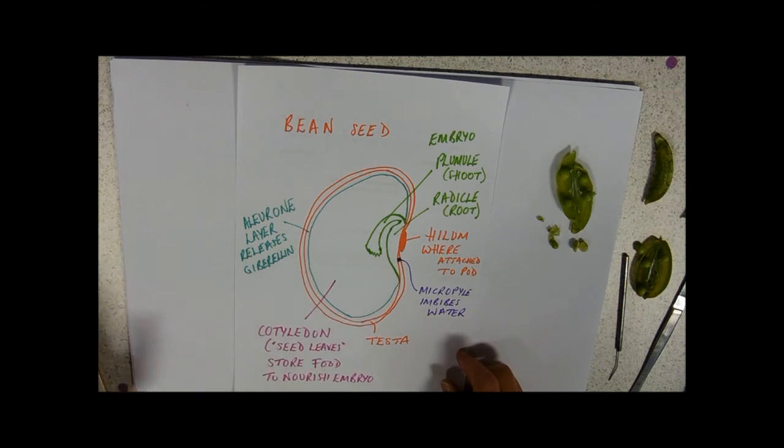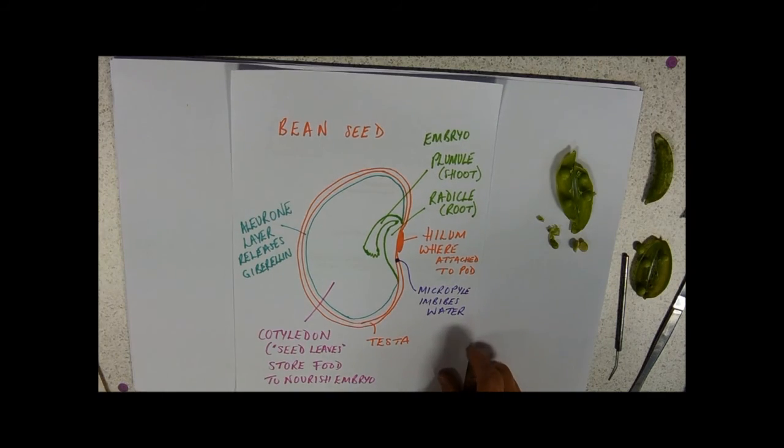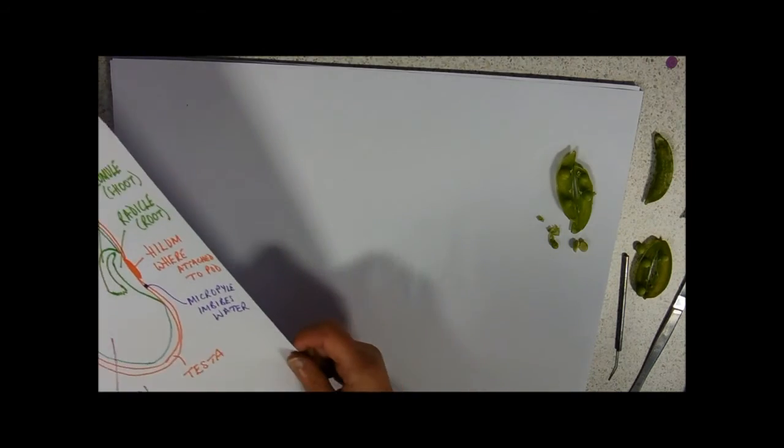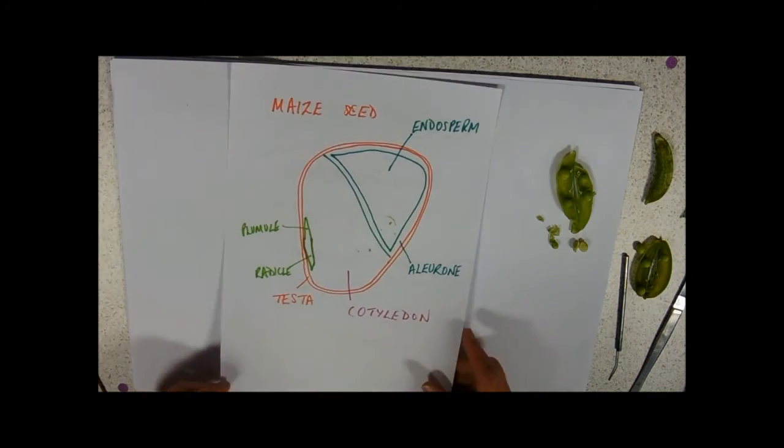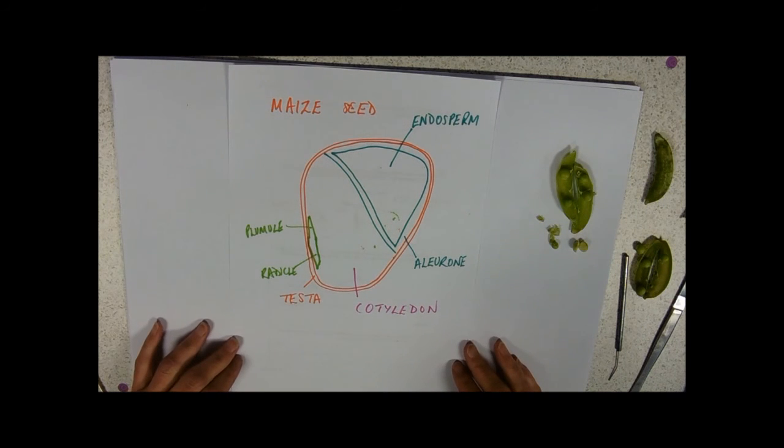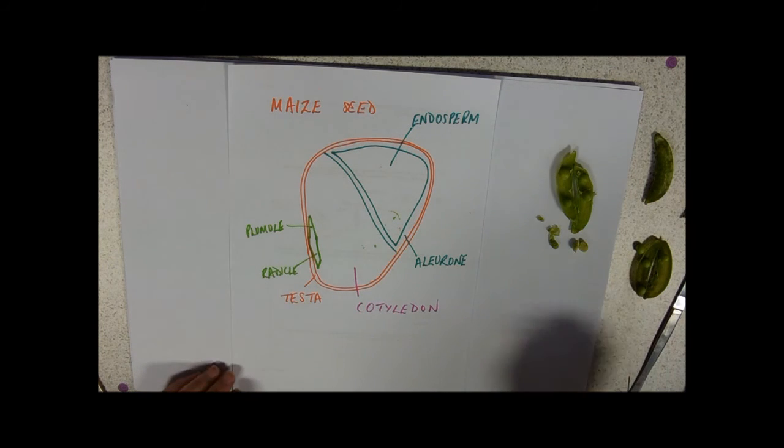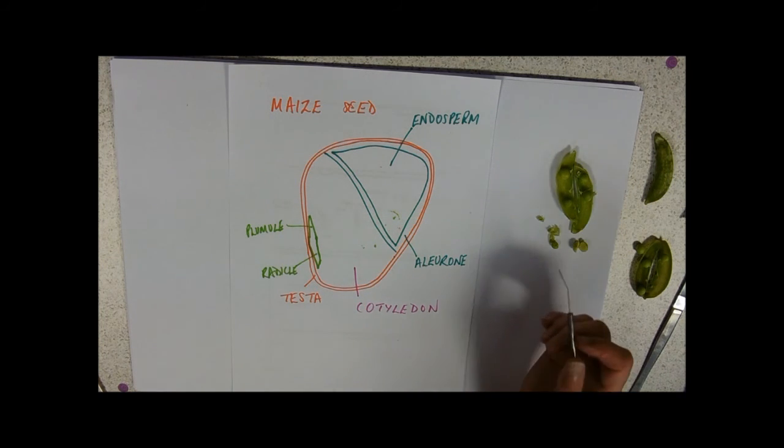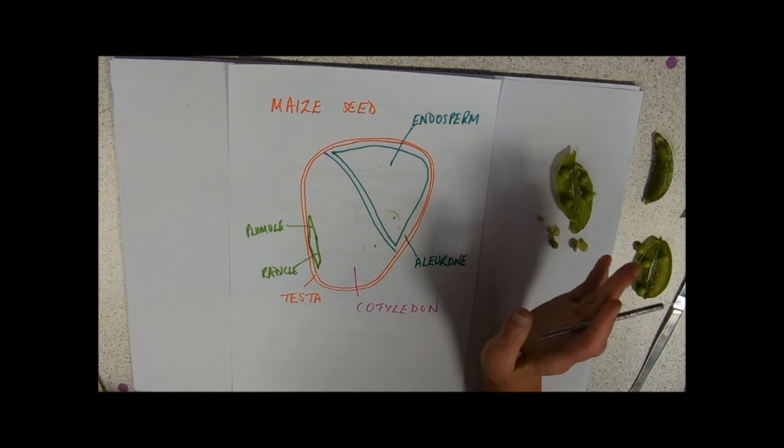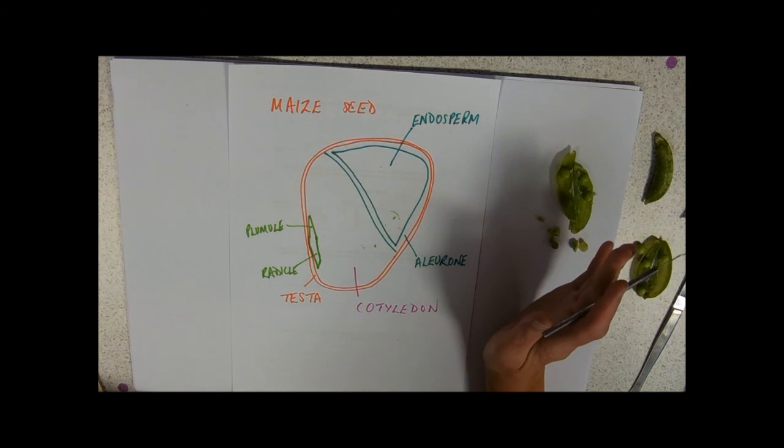Bean seeds are on your syllabus, so you should definitely know the structure of the bean seed. The other seed that's on is a maize seed. This is the yellow stuff on corn on the cob, which you'll become increasingly familiar with as we're doing genetics. The maize seed is slightly different.